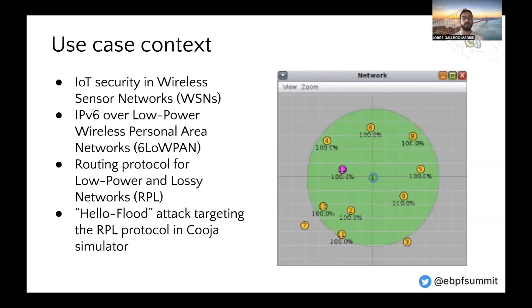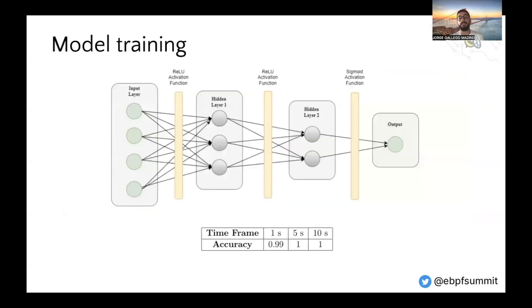IoT security in wireless sensor networks was the selected use case to demonstrate our solution. We prepared a dataset using the Cooja Simulator to recreate an IoT scenario with devices implementing 6LoWPAN and RPL. This scenario focuses on the detection of the HelloFlood attack on the RPL protocol. The goal is to determine if a node is malicious or not, which is a binary classification problem. We selected multi-layer perceptron models given their flexibility and accuracy to analyze traffic and detect anomalies.